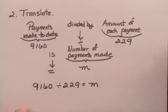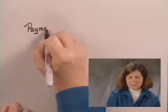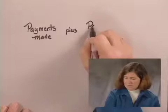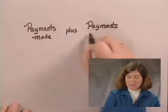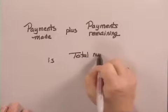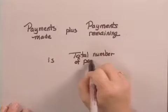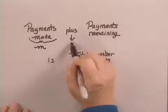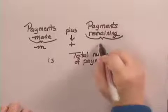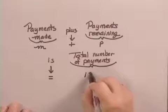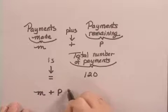We were asked to find the number of payments that remained, so we're going to need another equation. We can think of that as the payments already made, M, plus the payments that remain to be made, P, equals the total number of payments, 120. So our second equation is M plus P equals 120.